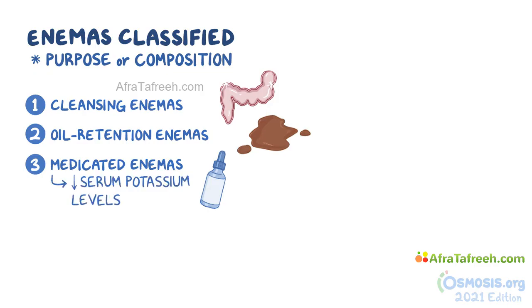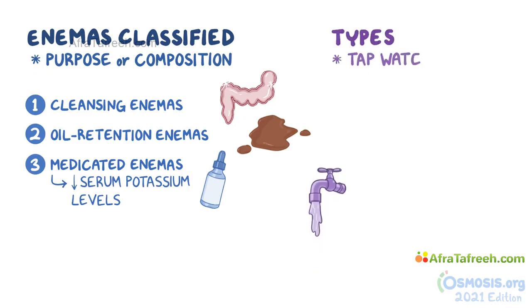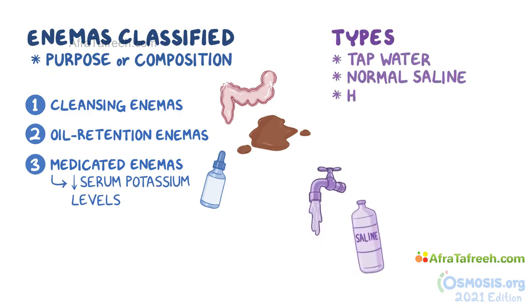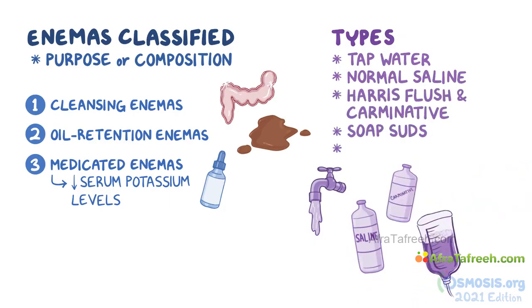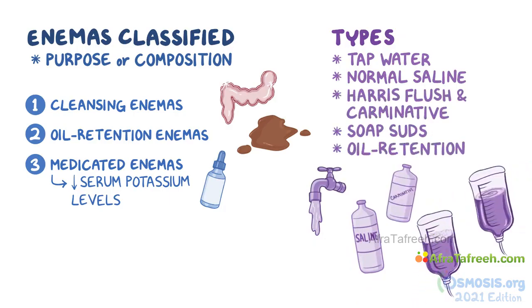Depending on their composition, the different types of enemas include tap water, normal saline, Harris flush, and carminative — which help with gas elimination — soap suds, and oil retention enemas, which are an oil-based solution.